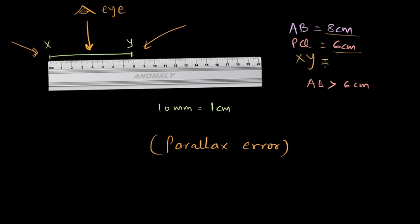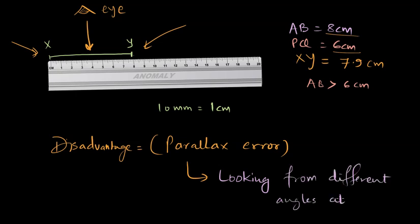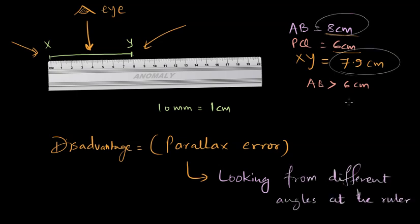So even if I can say that XY is little below 8 centimeter or probably about 7.9 centimeter, there is a disadvantage known as parallax error when we are looking from different angles at the ruler. So is there any foolproof method to this? There in fact is, and you have to use a divider with the ruler.